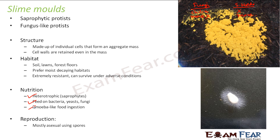Talking about the appearance of slime molds, they can be colored depending upon the pigments present inside them. Best examples would be water molds or the plasmodial molds.